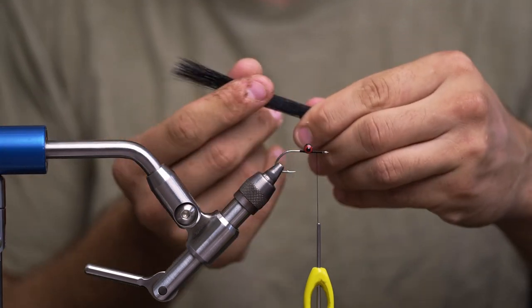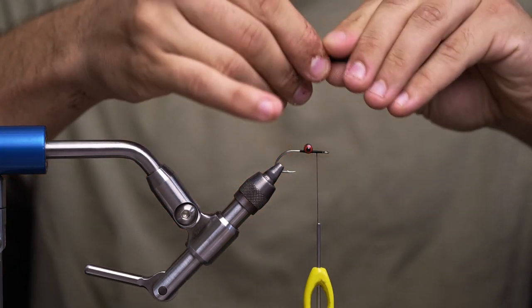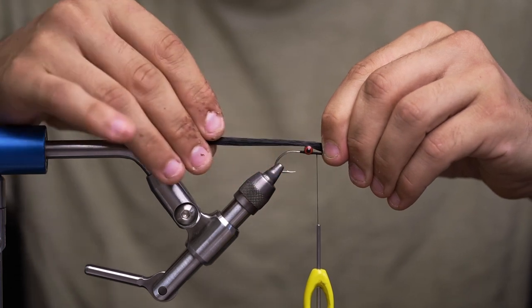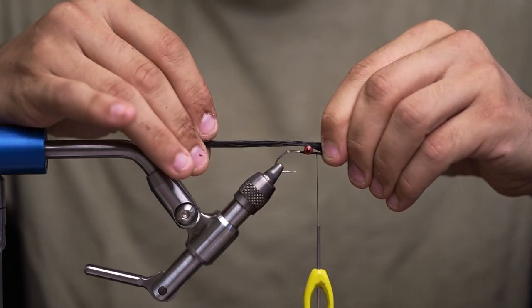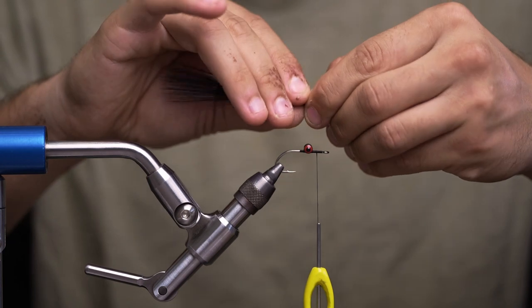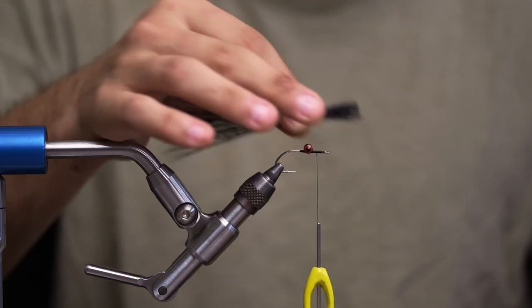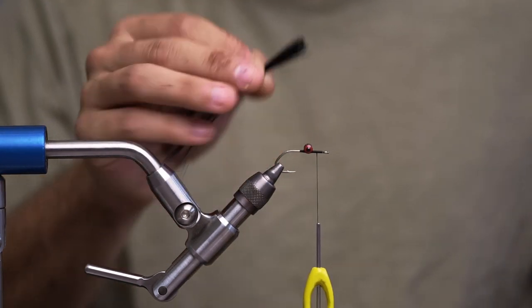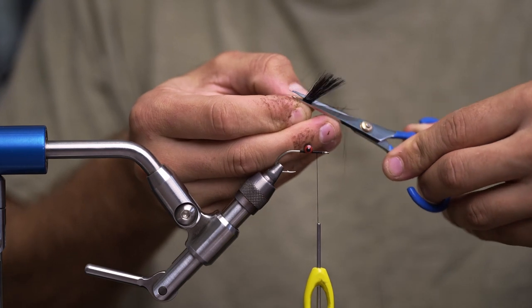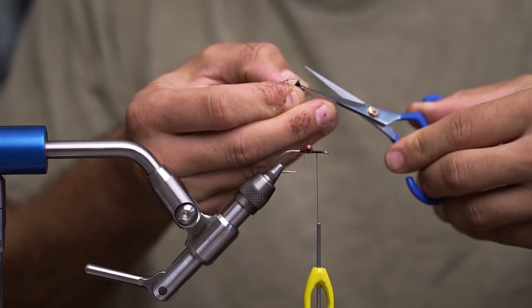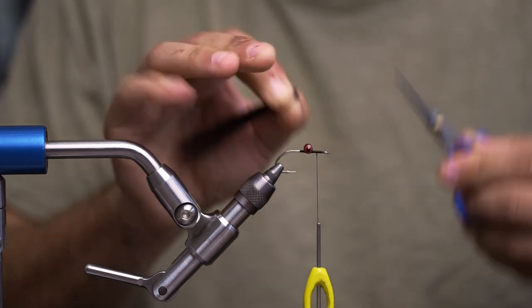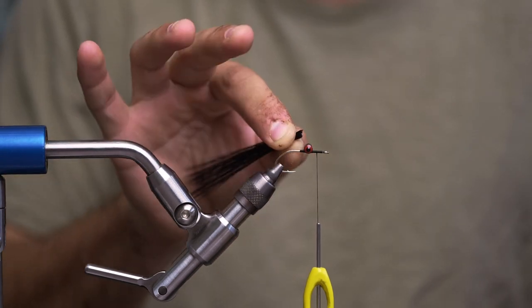So once I got the tips kind of looking aligned, I'm going to go ahead and measure how long I want this fly. To me, I want probably an inch and a half to two inches out the back. I'm going to measure exactly where I want at the eye, take it all in my fingers, and I'm going to make one or two nice sweeping cuts so I have everything cut nice in my hand.